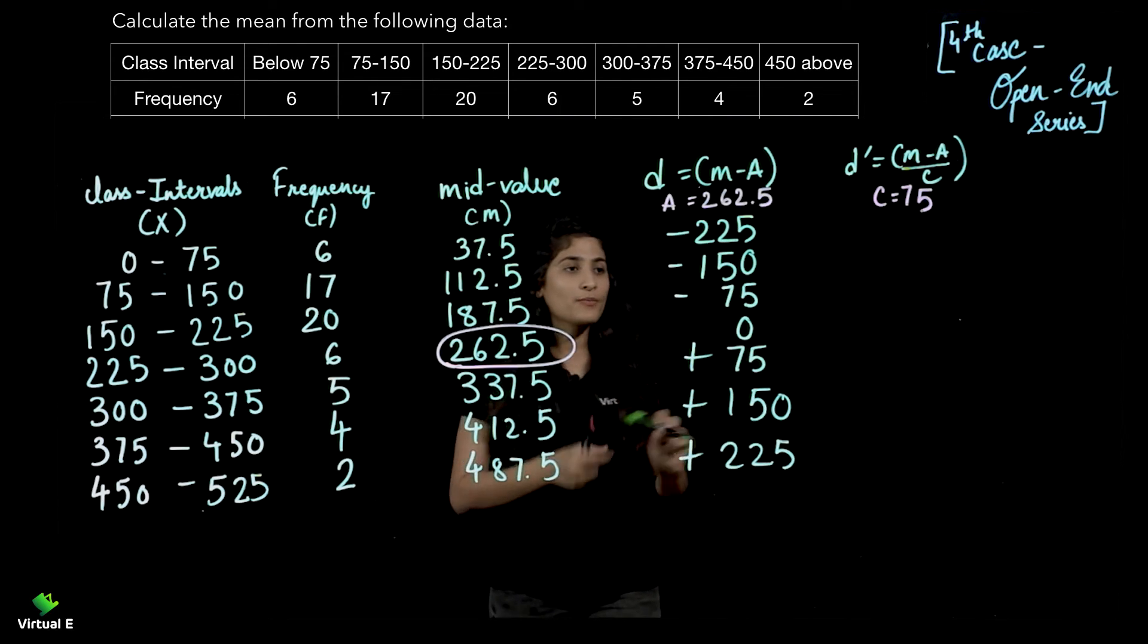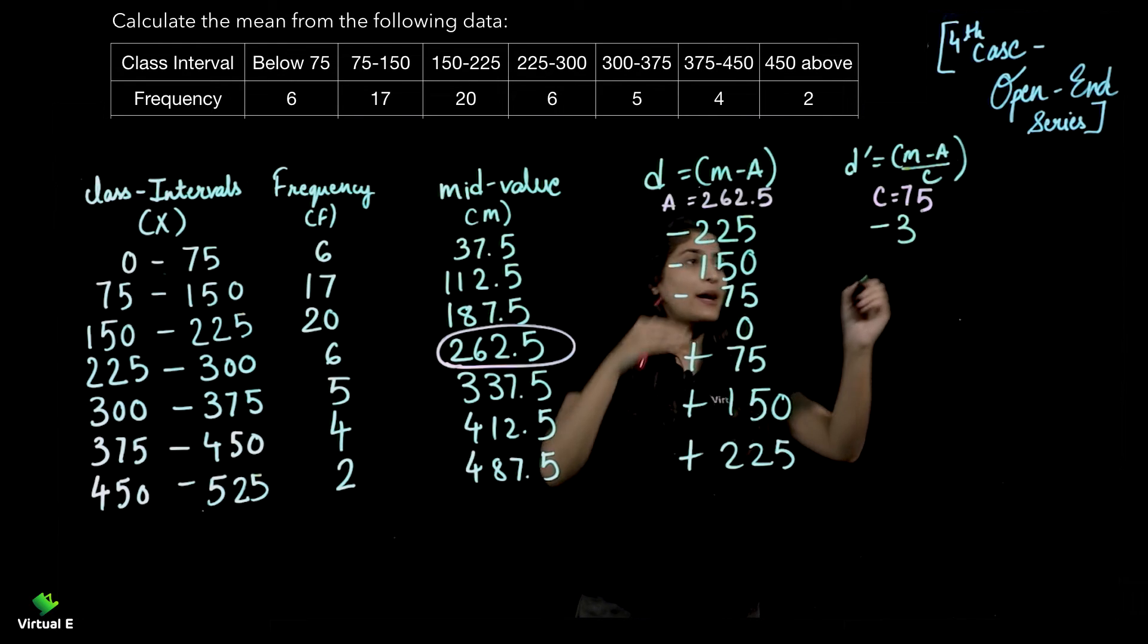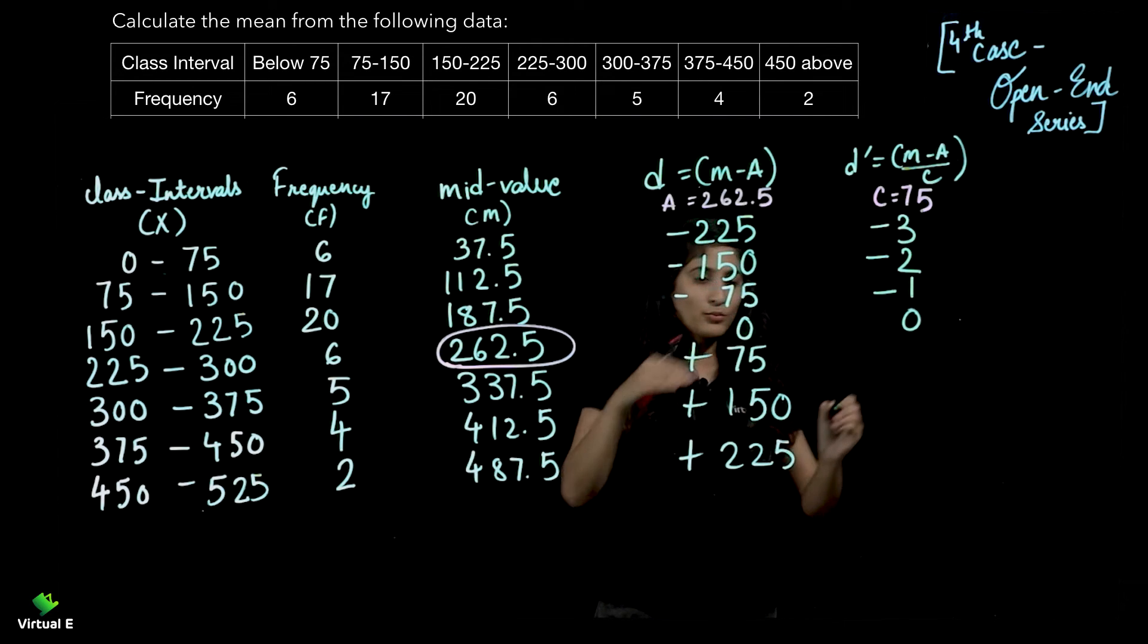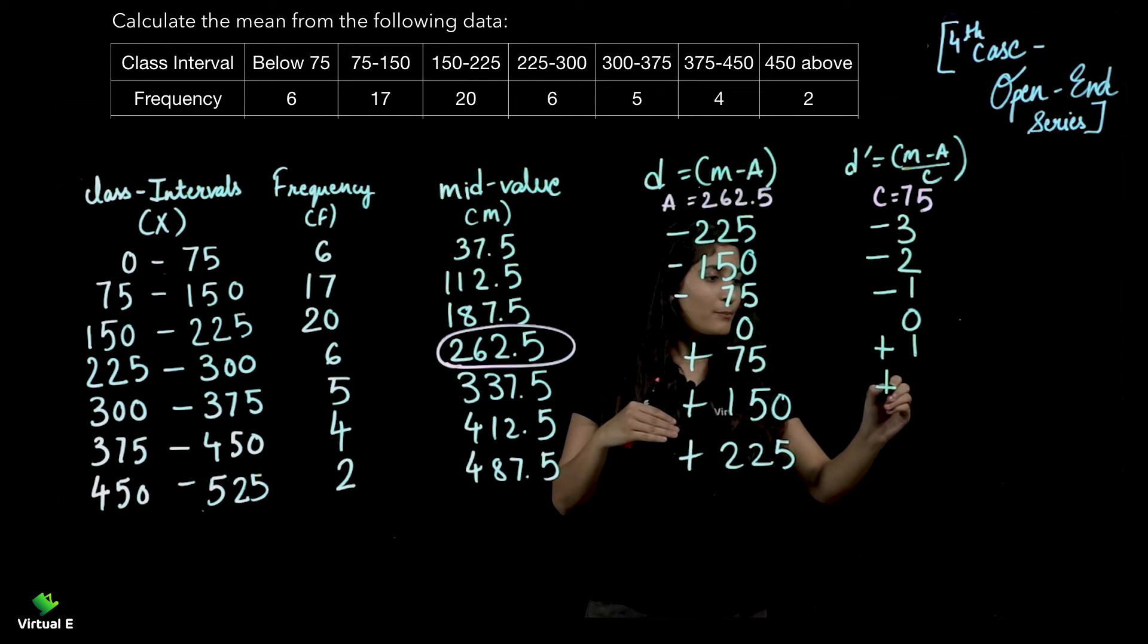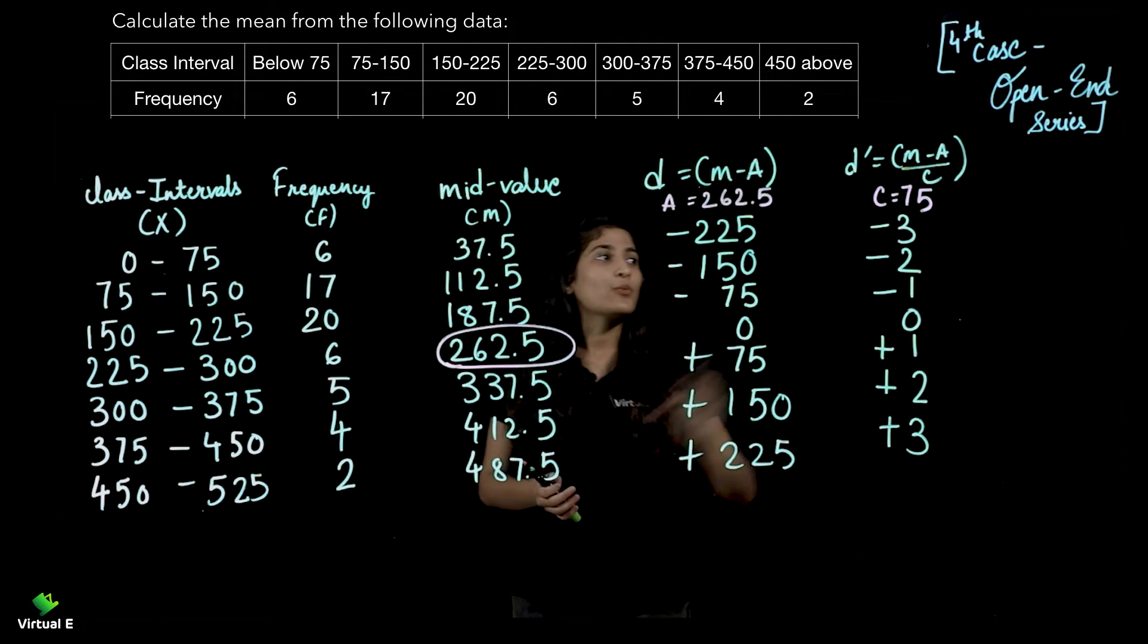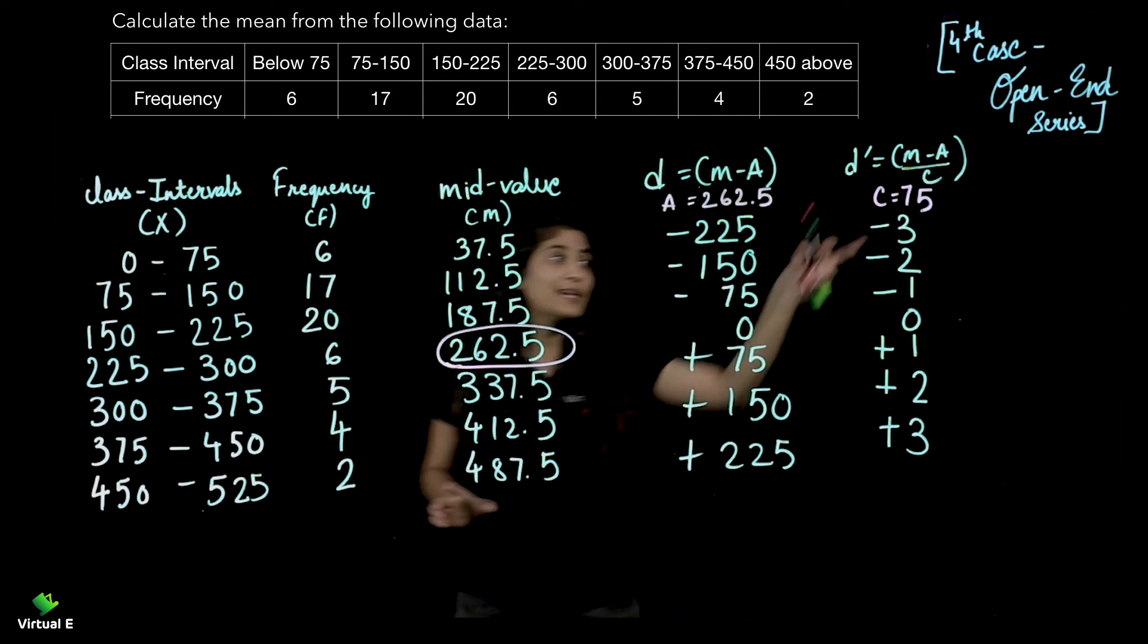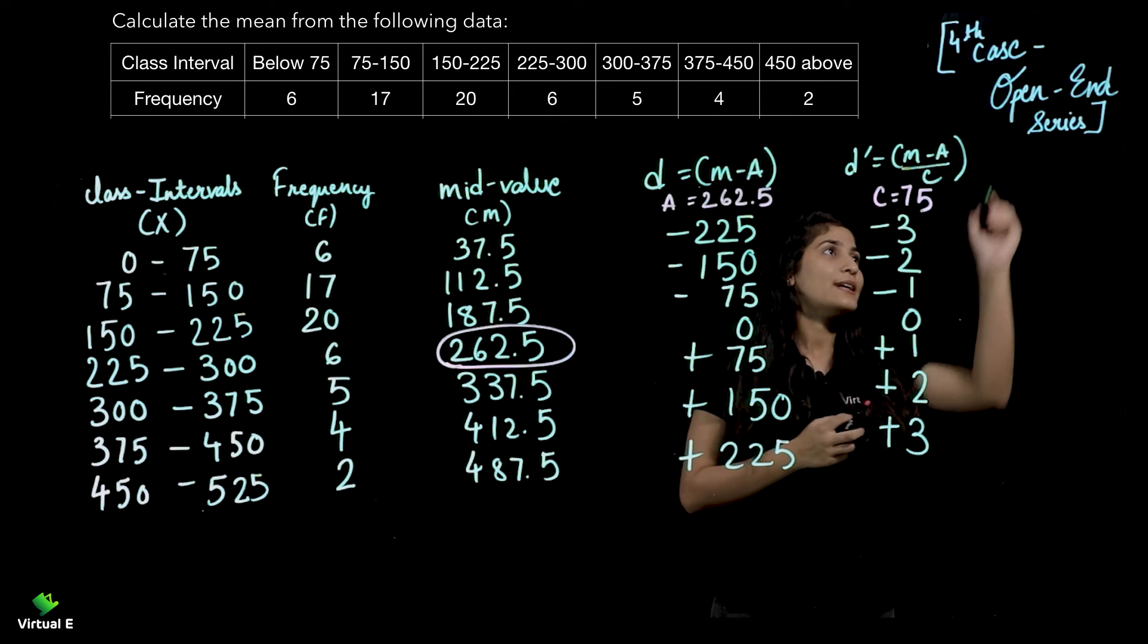Now here you will get minus 3, minus 2, minus 1, 0, again plus 1, plus 2, and plus 3. After you are done with D dash, we need to calculate F D dash. That means F or D dash ko hum multiply kareinge. Let's calculate F D dash.